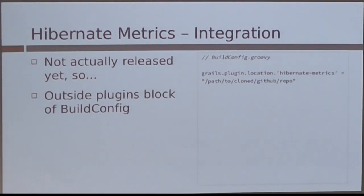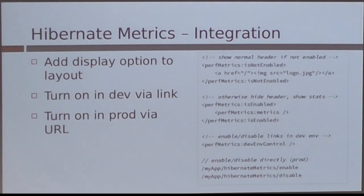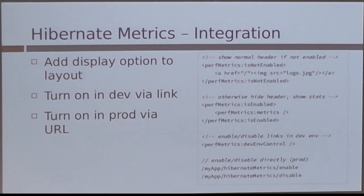It's not actually released yet. To include it currently, you would grab it off GitHub if you want to play with an early version. Put it in your BuildConfig — it doesn't go in the plugins block, it goes outside of your plugin block. That was something that took me a while to figure out. You just put this tag in your GSP somewhere, and then you have a link you can turn on on the fly. You can also navigate to the URLs directly to turn it on, which is how you would approach it in production.